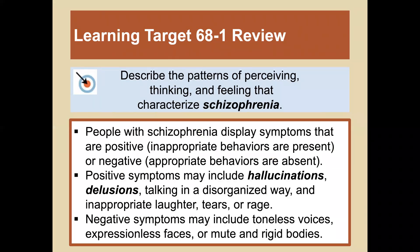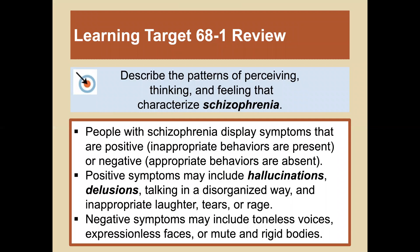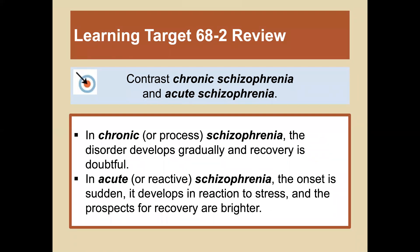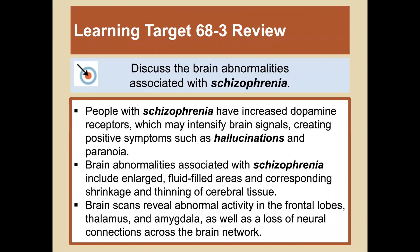Returning to the learning targets: people with schizophrenia display positive symptoms — inappropriate behaviors that are present, such as hallucinations, disorganized talking, and inappropriate laughter, tears, or rage — or negative symptoms, appropriate behaviors that are absent, such as toneless voices, expressionless faces, or mute and rigid bodies. In chronic schizophrenia, the disorder develops gradually and recovery is doubtful. In acute schizophrenia, onset is sudden, develops in reaction to a stressor, and prospects for recovery are brighter. People with schizophrenia have increased dopamine receptors, which may intensify brain signals creating positive symptoms. Brain abnormalities include enlarged fluid-filled areas and shrinkage and thinning of cerebral tissue, as well as abnormal activity in the frontal lobe, thalamus, and amygdala, and a loss of neural connections across the brain network.